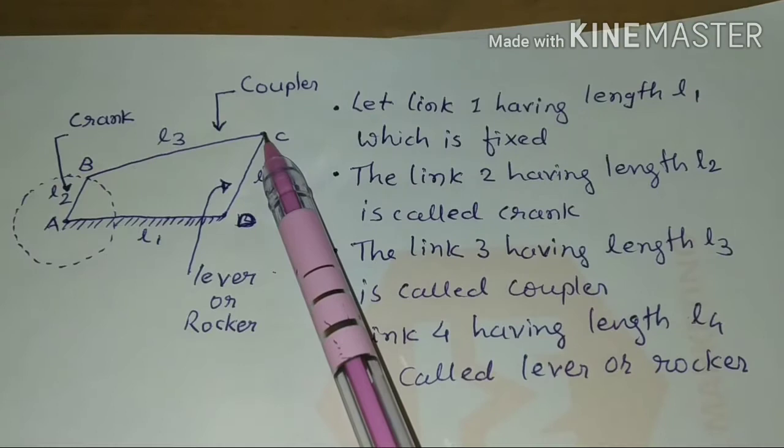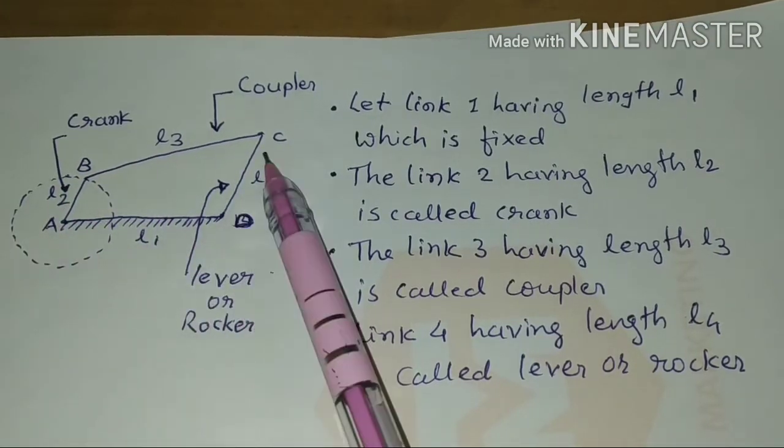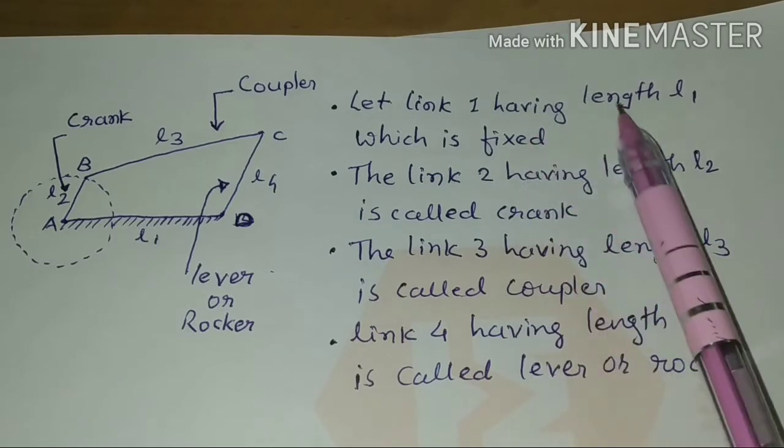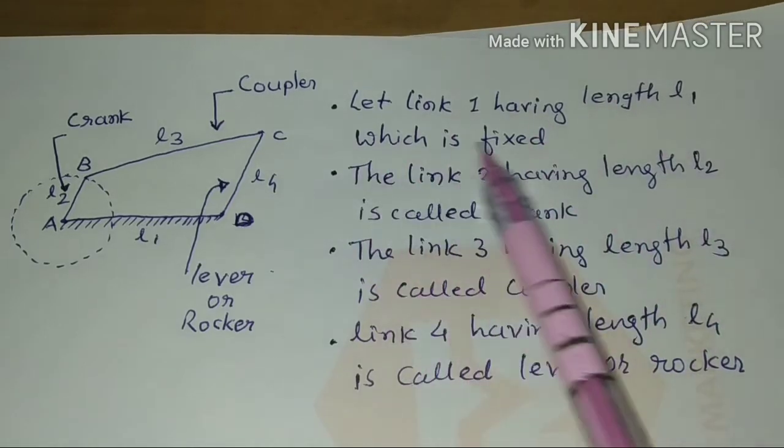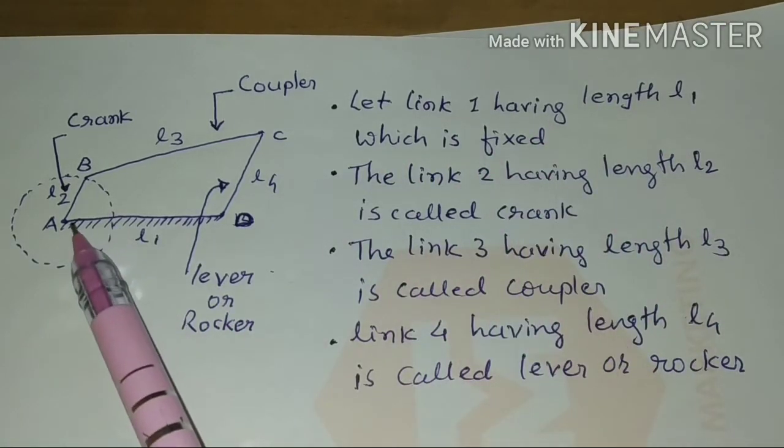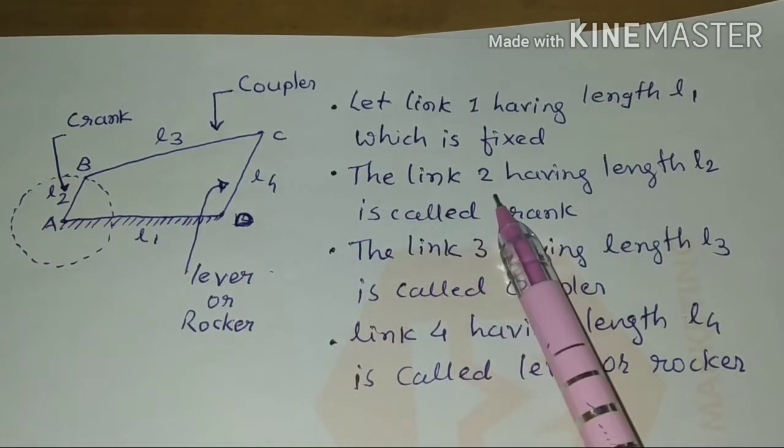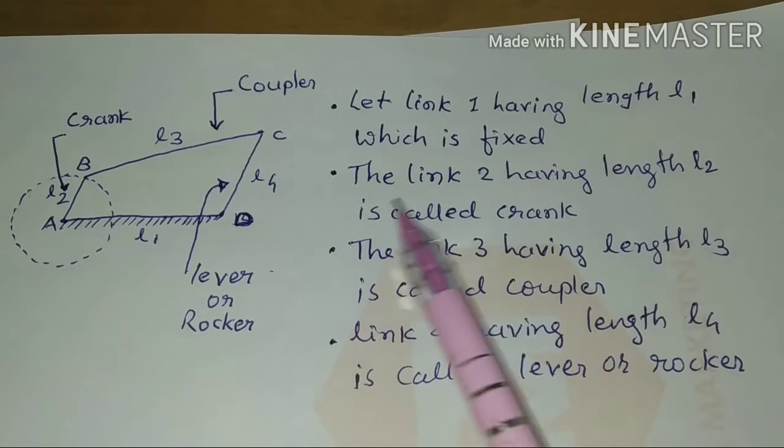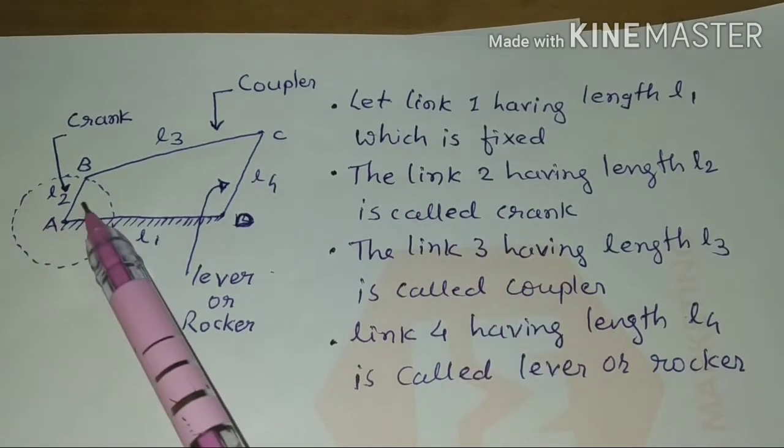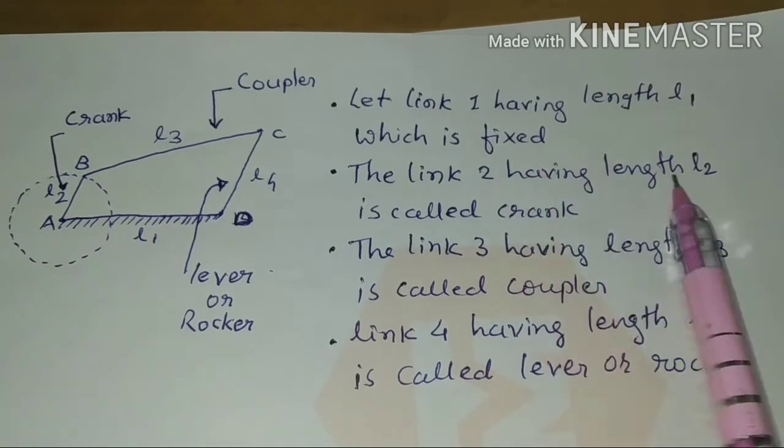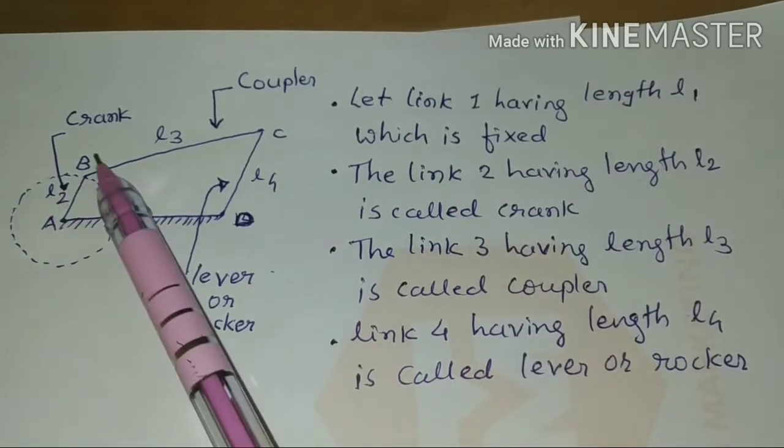Okay let's start with 4 bar kinematic chain. Let link 1 having length L1 which is fixed. This is a fixed length. The link 2 having length L2 is called crank.